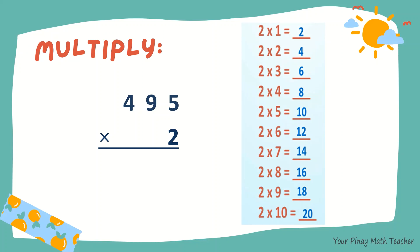Let's multiply 2 by 5. 2 times 5 is 10. So we put 0 below and carry 1 on top of 9. 2 times 9 is 18. Add 1 to 18, we get 19. 9 carry 1.